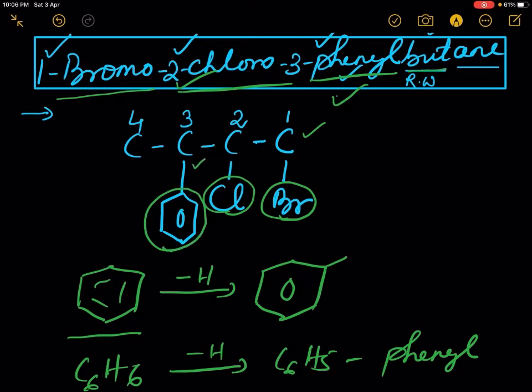Butane means 4 carbon atoms. '-ane' means there are carbon-carbon single bonds.